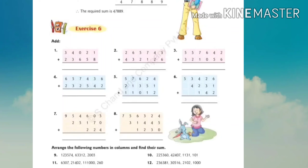इस exercise में जो questions हैं वो addition without carrying पर based हैं - simple addition। Question number 4: 6+2=8, 3+4=7, 4+5=9, 7+2=9, 5+3=8, 6+2=8. Question number 7: 3+0=3 (किसी भी number में 0 add करने पर वही number मिलता है), 3+4=7, 0+7=7, 7+2=9, 6+1=7, 7+2=9, 4+5=9, 5+2=7, और 9 को as it is लिखेंगे। इसी तरीके से question 1 से 8 तक अपने book में solve करोगे।